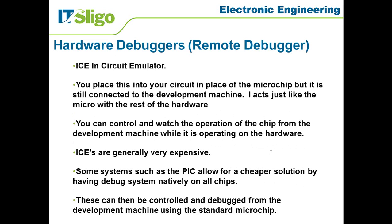There are also hardware debuggers, sometimes called remote debuggers. The main type is the ICE, or in-circuit emulator. You take the microchip out of your circuit — which may have sensors and actuators for motors — and replace it with an in-circuit emulator that pretends to be the microchip but can communicate with your development PC. You place this into the circuit; it remains connected to the development machine and acts just like the microprocessor with the rest of the hardware, allowing you to control and watch the chip's operation while it operates on the real hardware.